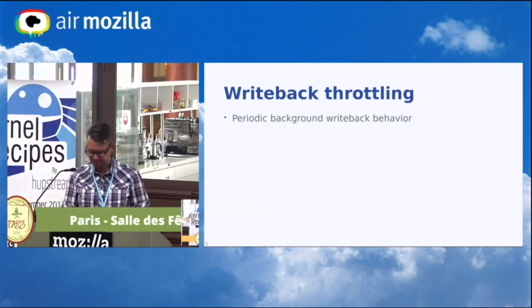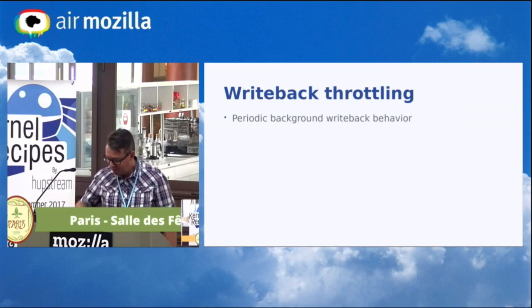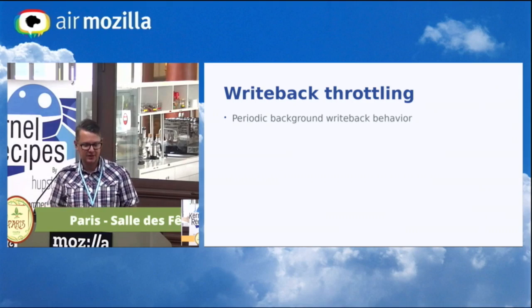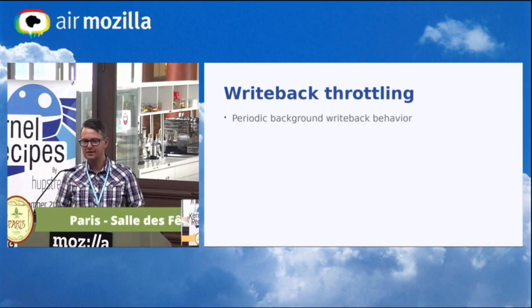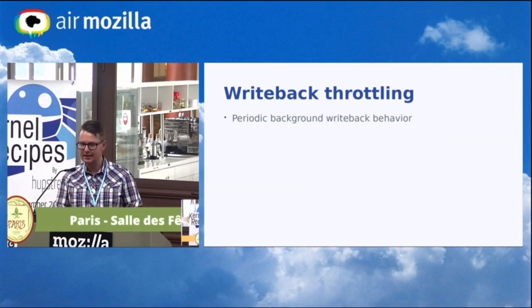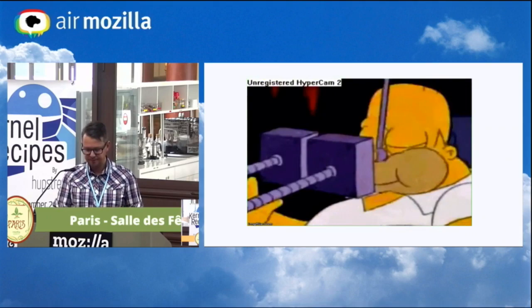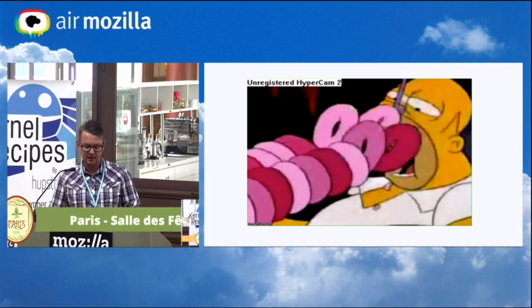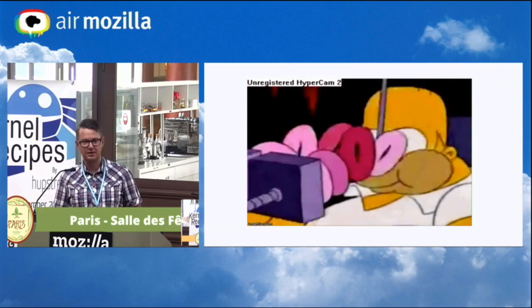Another new feature was writeback throttling. To understand it, you first need to understand how the kernel handles writeback: when an application writes to files, at some point that dirty data needs to be flushed to the backend store. That can happen explicitly through the application doing something like fsync or sync_file_range, or if the application does not, the kernel decides to clean those pages — either because the data is too old or there's too much of it — called background writeback.